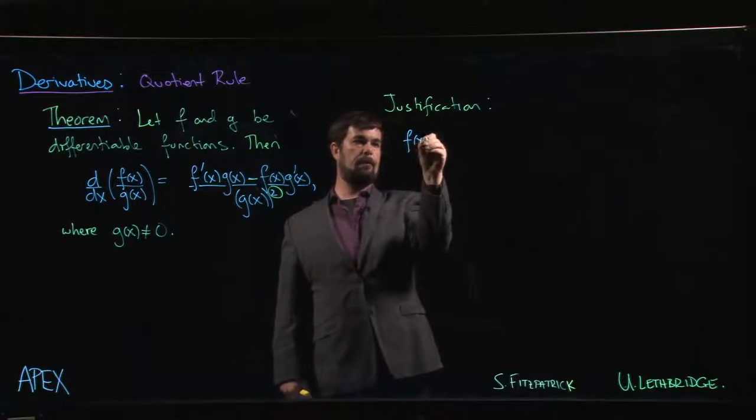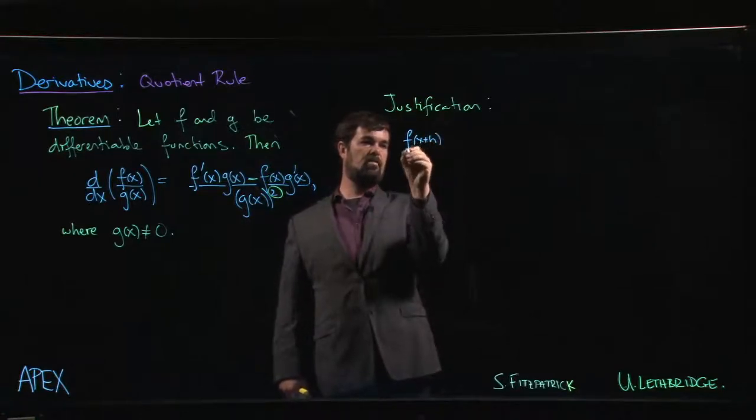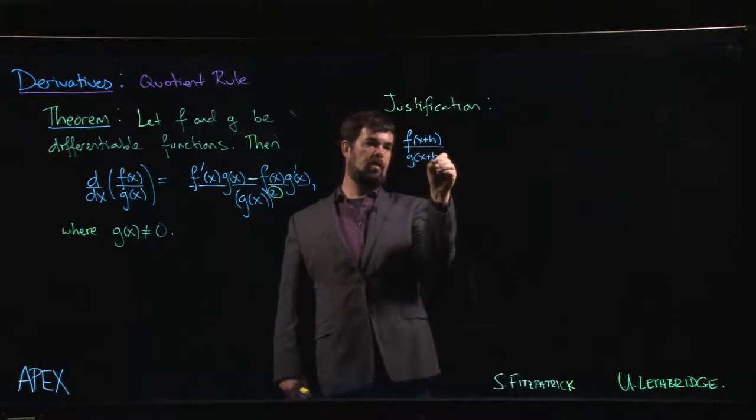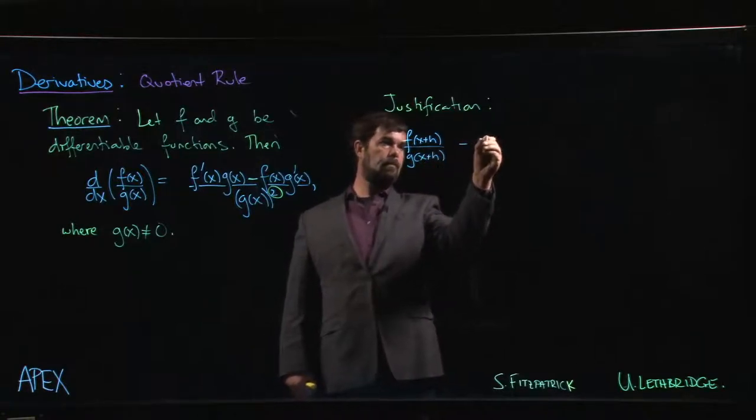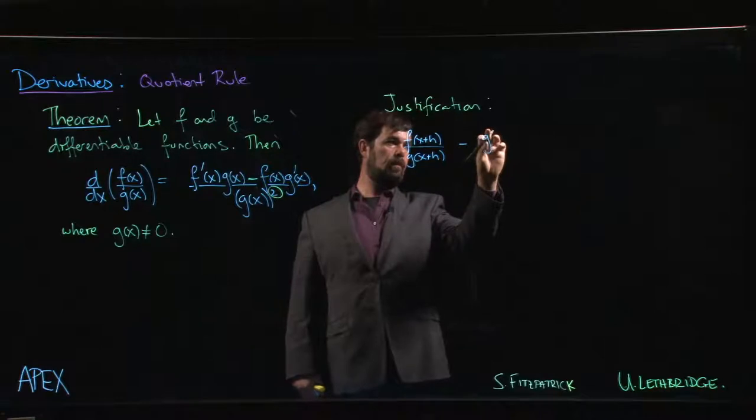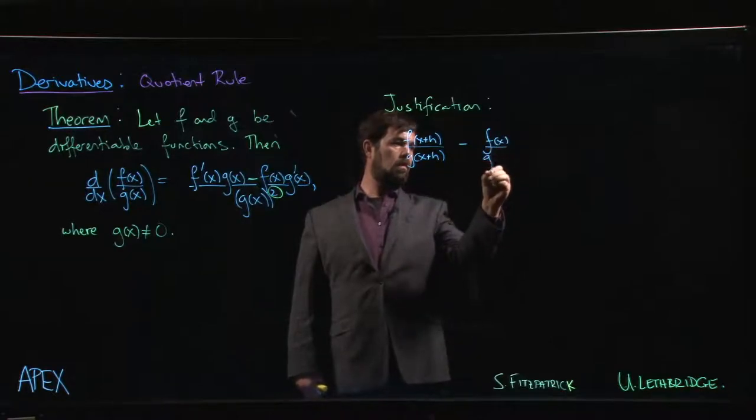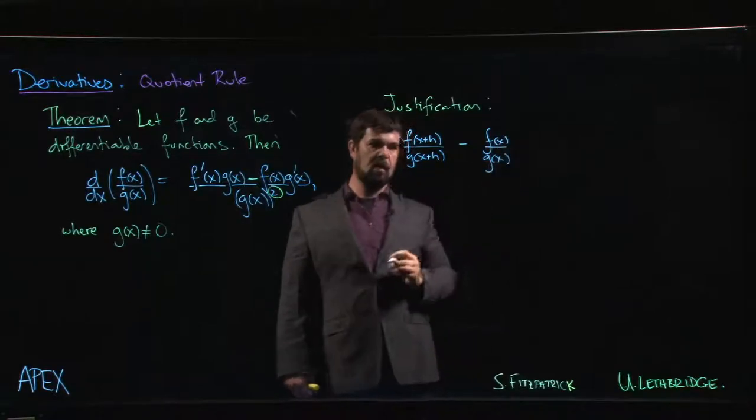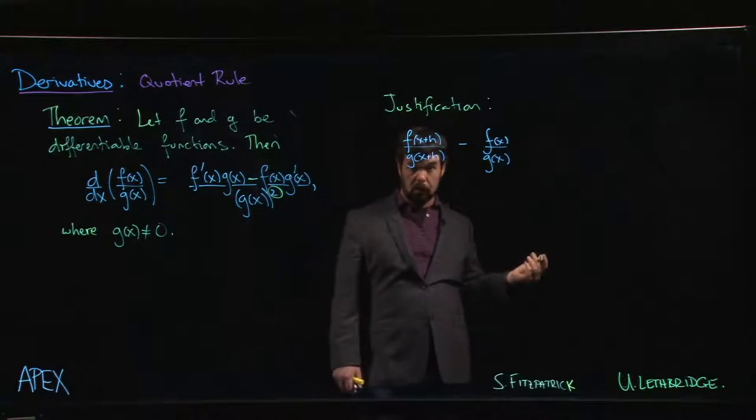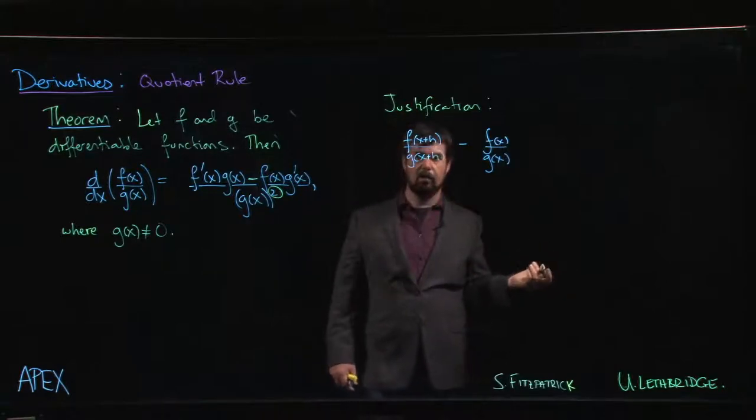have f of x plus h over g of x plus h minus f of x over g of x, and then that whole thing of course would be divided by h. There would be